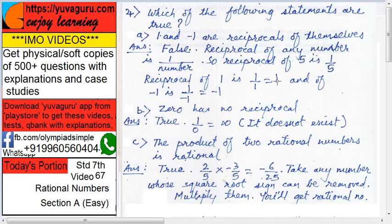is 1/1, that is 1, and of -1 is 1/(-1), so they are not reciprocals of each other. Statement b: 0 has no reciprocal. That is true because 1/0 equals infinity, not defined.